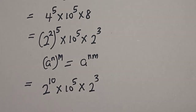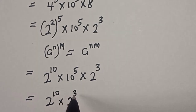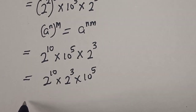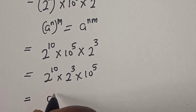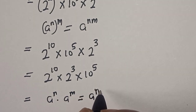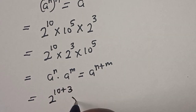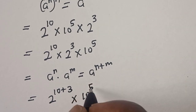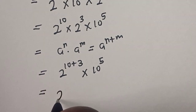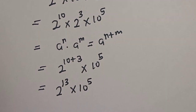Now if we rearrange, we have 2 to the power of 10 multiplied by 2 to the power of 3, multiplied by 10 raised to power 5. Take note of this rule: if you have a raised to power n multiplied by a raised to power m, this is equal to a raised to power n plus m. So we have 2 to the power of 10 plus 3, multiplied by 10 to the power of 5, which equals 2 raised to power 13 multiplied by 10 raised to power 5.